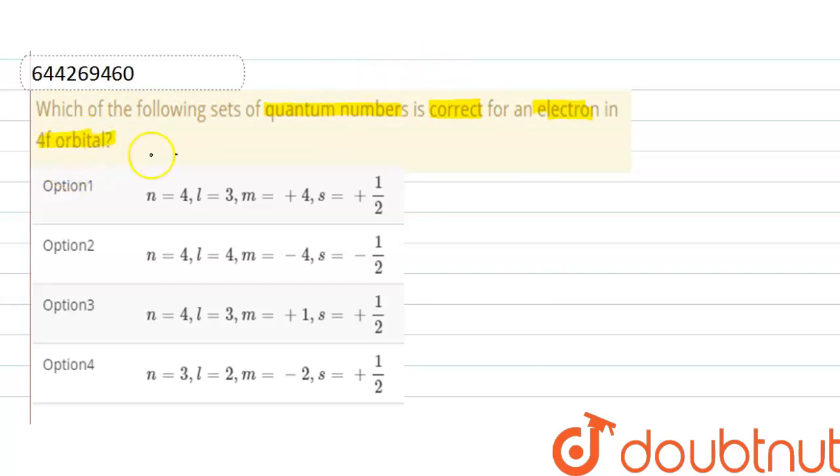First we'll write out all the quantum numbers possible for 4f orbital. Here the value of principal quantum number is 4 and the value of l for f subshell is 3, and the value of m possible are